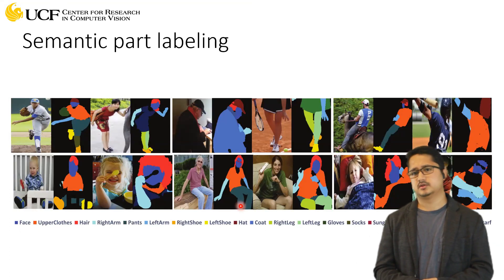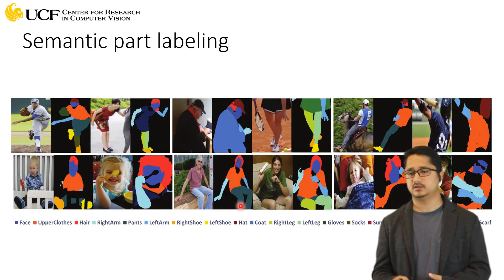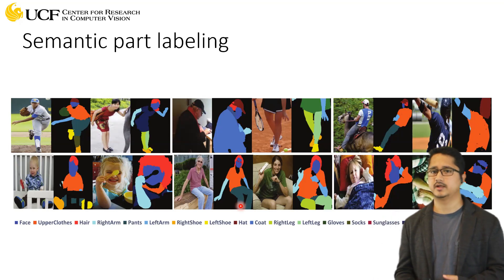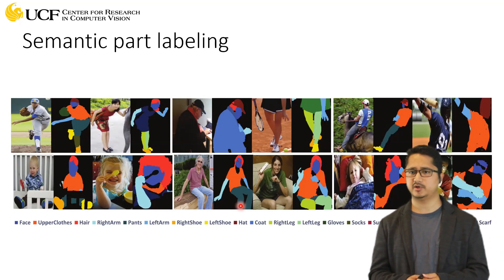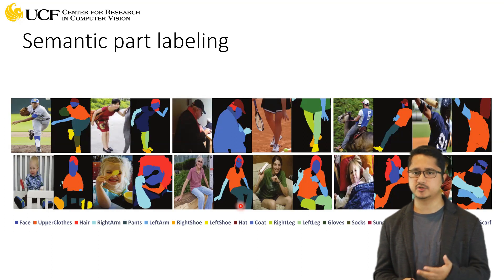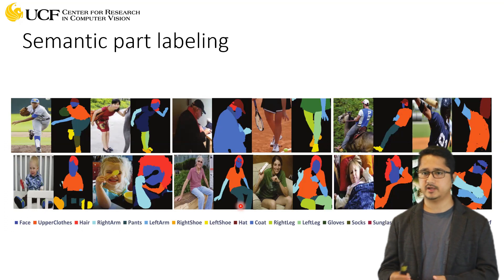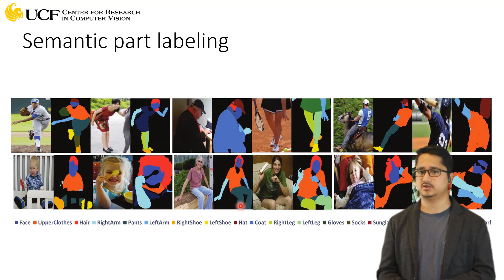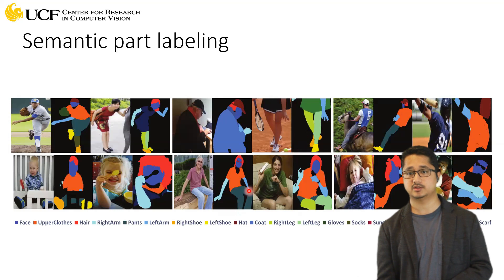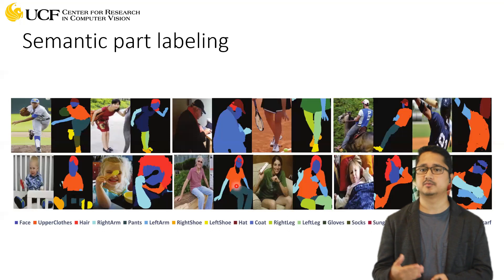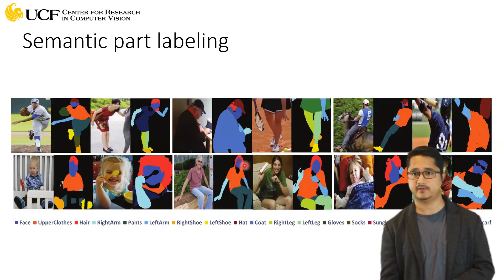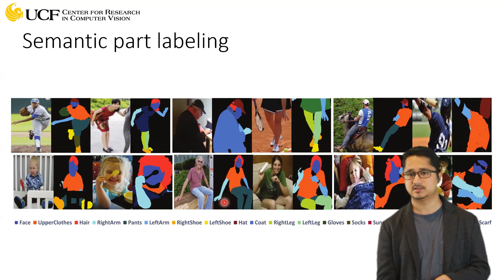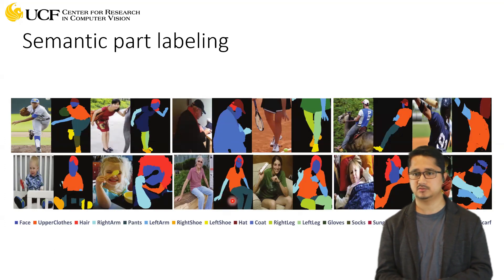The next step beyond semantic segmentation is fine-grained segmentation of different parts or concepts present in an image. This is more complex — you're not just saying this pixel belongs to a person, you're also trying to segregate different parts of that individual: whether it's a face, a cap, whether these pixels belong to the hand or some clothing. It's essentially more fine-grained analysis.